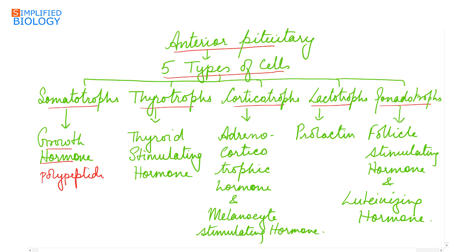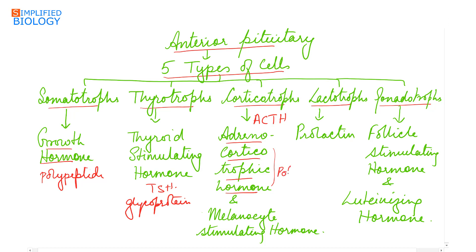Somatotropes produce growth hormone, which is a polypeptide. Thyrotropes form thyroid stimulating hormone (TSH), which is a glycoprotein. Corticotropes form ACTH (adrenocorticotropic hormone), a polypeptide, and also MSH (melanocyte stimulating hormone). Lactotropes form prolactin, a polypeptide. Gonadotropes form FSH (follicle stimulating hormone) and LH (luteinizing hormone), which are glycoproteins.